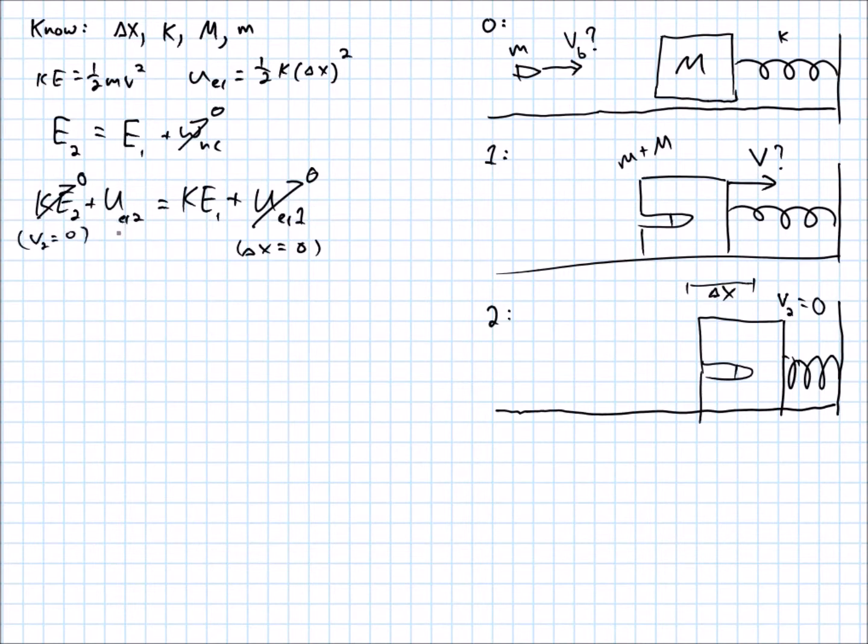So I'm just left with the elastic potential energy at 2, 1 half k delta x squared. It's been compressed in by delta x, will be equal to the kinetic energy at 1, which is 1 half m v squared, that v right there, the velocity that they had together.